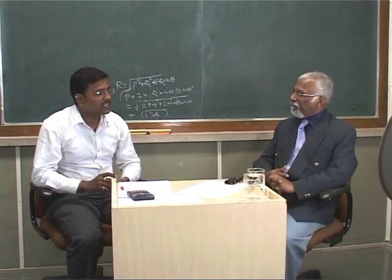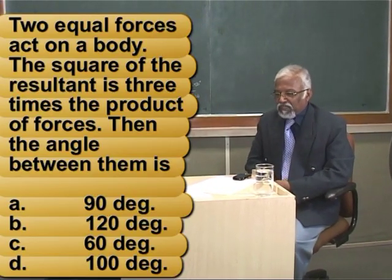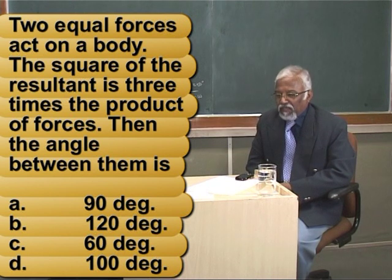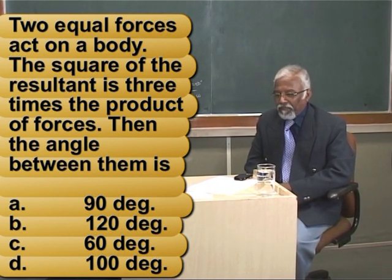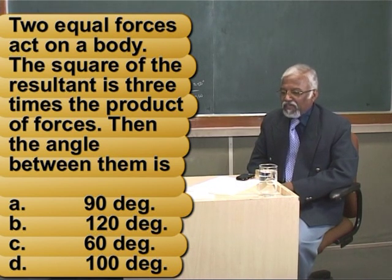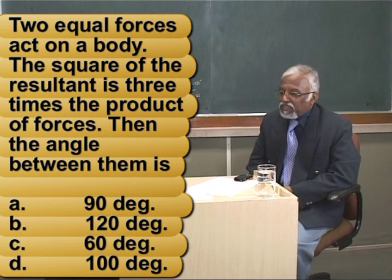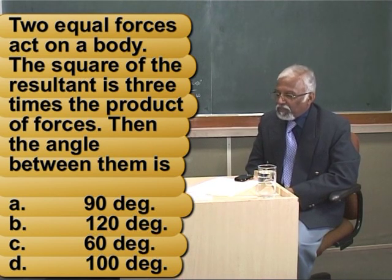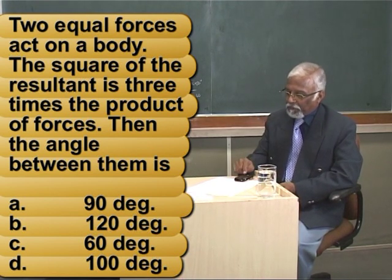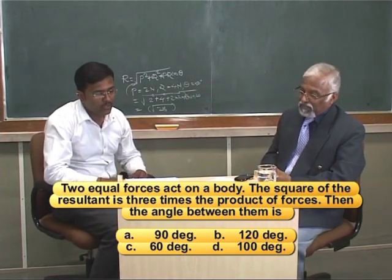Can we go on to the next question? Yes, sir. Okay, the next question is: two equal forces act on a body. The square of the resultant is 3 times the product of forces. Then the angle between them is: the first option is 90 degrees, the second option is 120 degrees, the third option is 60 degrees, and the fourth option is 100 degrees.